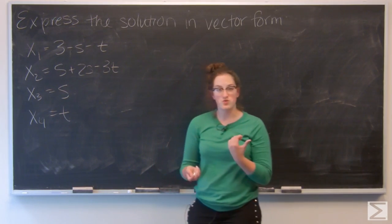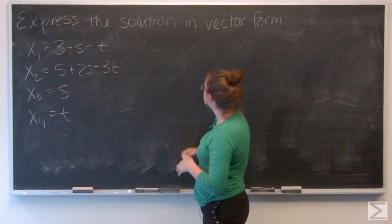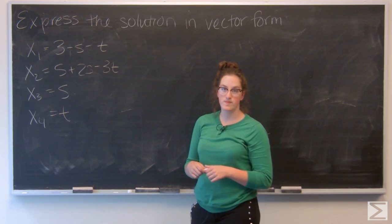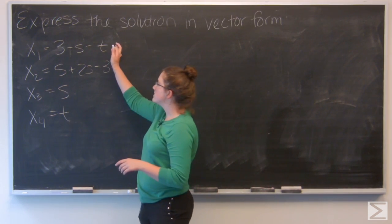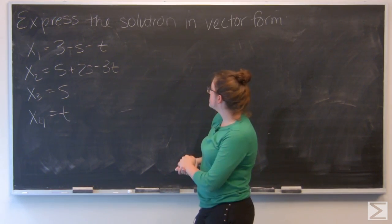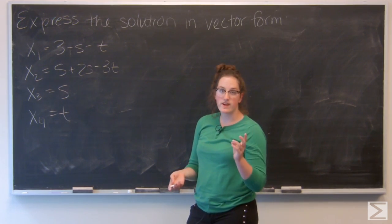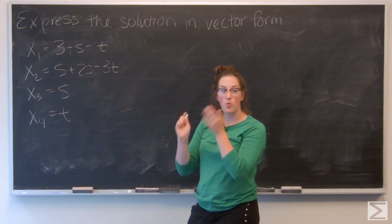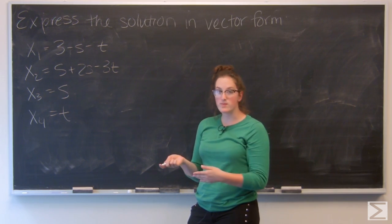In this question, I'm working with the solution to a previous problem, and I'm asked to express this solution in vector form. So I have x1 through x4 in terms of s and t. And to put this into vector form, I'm going to have three vectors, one of constants, one multiplied by s, and one multiplied by t.